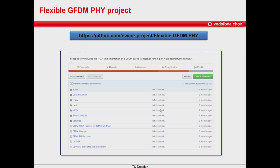The code with the LabVIEW implementation is available online in a GitHub repository. You can find the link in the description box. We can download the zip file with the code and extract it to the hard disk drive. Here we can see the folder structure of the project, and under documentation you can find a PDF tutorial with more detailed information about the configuration of the transceiver.